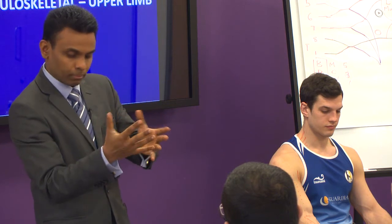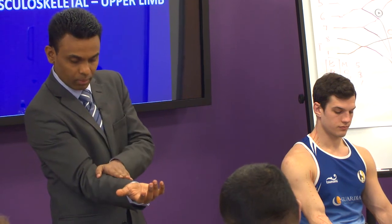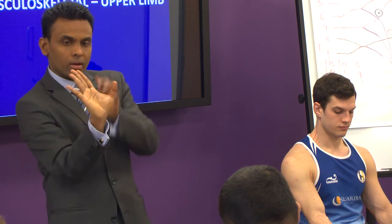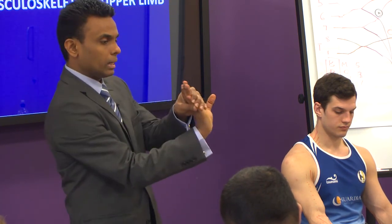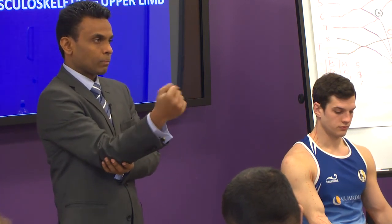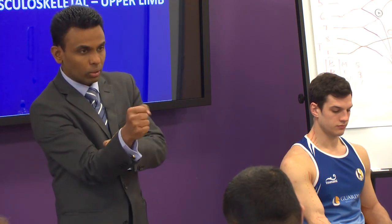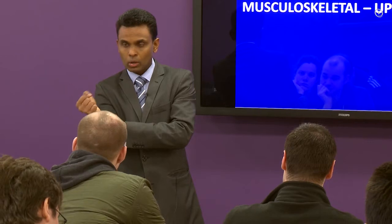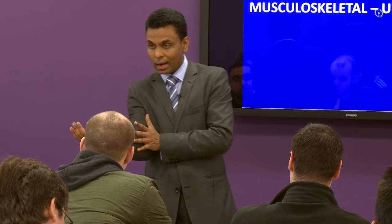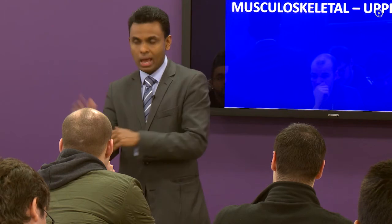The three deep muscles are: flexor pollicis longus (to the thumb), flexor digitorum profundus (to the distal interphalangeal joints), and pronator quadratus. Pronator teres acts more proximally and pronator quadratus more distally. Of all eight muscles, only flexor carpi ulnaris and flexor digitorum profundus to the medial two fingers are supplied by the ulnar nerve — everything else is median nerve.